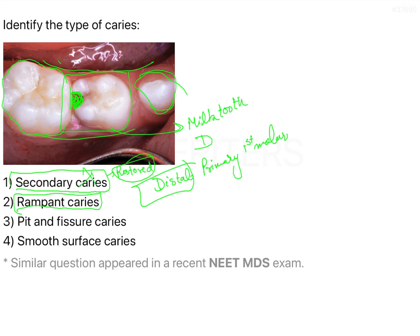Next, rampant caries — rampant caries is a type of caries that is acute and very extensive in nature, involving a lot of teeth in the individual. If you see that other teeth are very healthy and only one tooth is having a problem, you can exclude rampant caries as well.